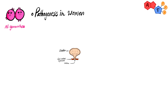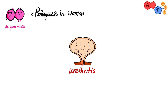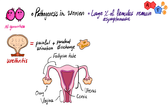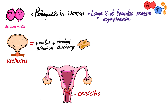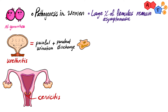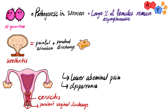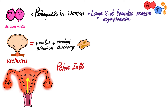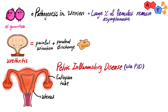Now let's move on to women. Like men, women can develop urethritis and present with painful urination and purulent discharge. However, unlike men, a large percentage of women will remain asymptomatic. In addition to urethritis, Neisseria gonorrhoeae can also affect the cervix and cause cervicitis. Again, a large percentage of these women will remain asymptomatic, but some will present with lower abdominal discomfort, dyspareunia or pain with sexual intercourse, and purulent vaginal discharge. The infection of the cervix can ascend and cause pelvic inflammatory disease — also known as PID — which is inflammation of the uterus, fallopian tubes, and ovaries.